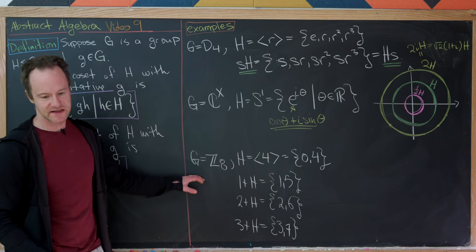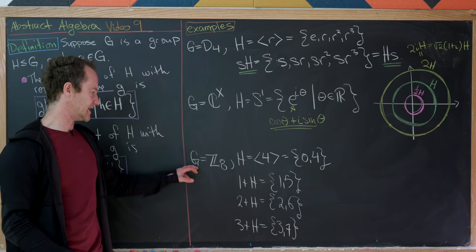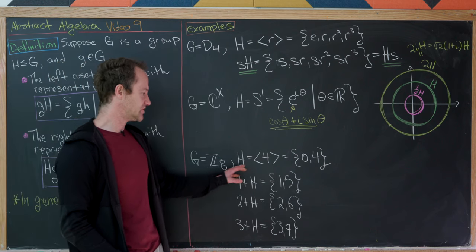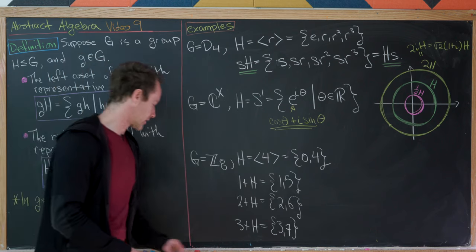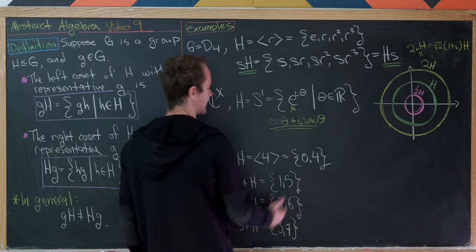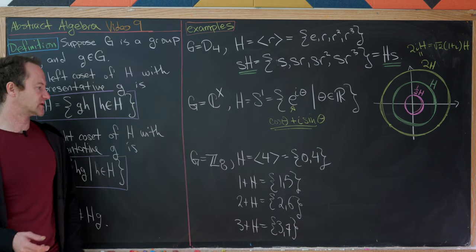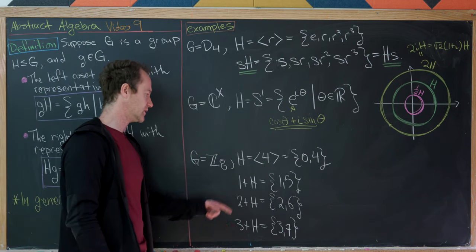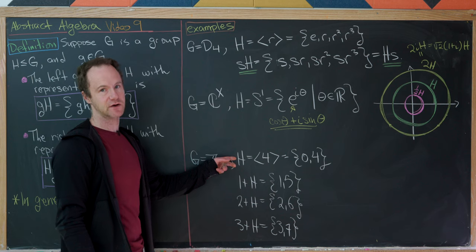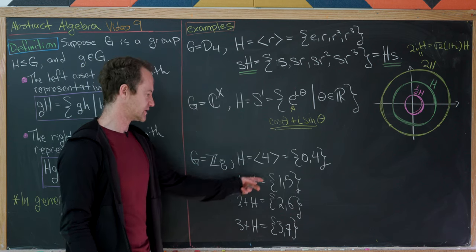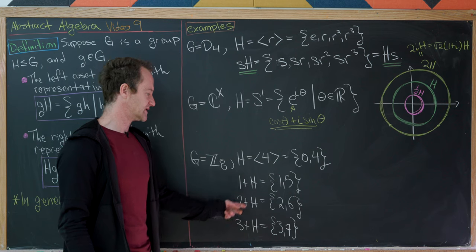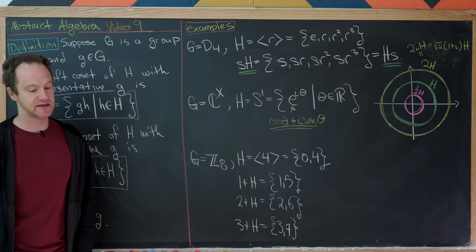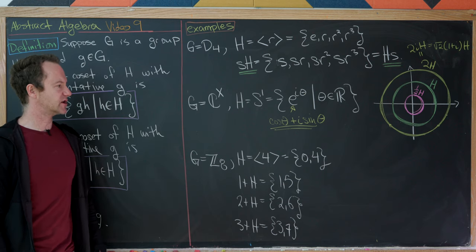Now let's look at one last example: take G = Z₈ and H to be the cyclic subgroup generated by 4, which contains {0, 4} since 4+4 = 8 = 0 in Z₈. Then we have three more cosets after the identity coset: 1+H = {1, 5}, 2+H = {2, 6}, and 3+H = {3, 7}.